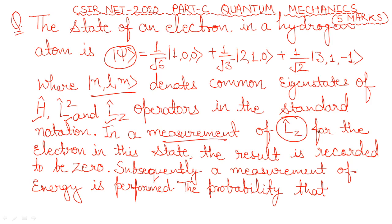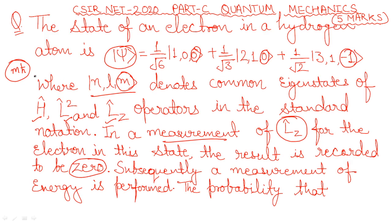When measuring LZ in this state, the result is 0. Operating LZ on a state with quantum numbers NLM gives eigenvalue M×ℏ. Since the result is 0, we need M=0. The last term in the given expression does not have M=0, so it will not give you 0 — therefore, you do not need to consider that last term from the given expression.